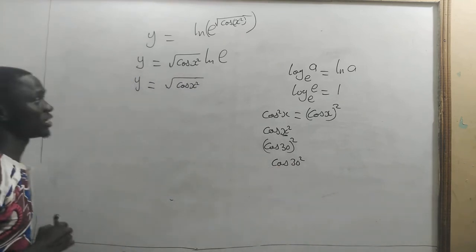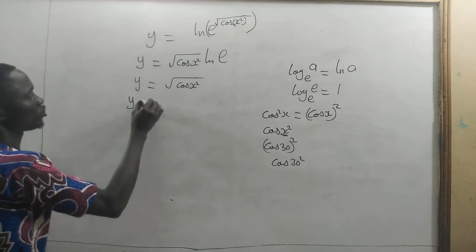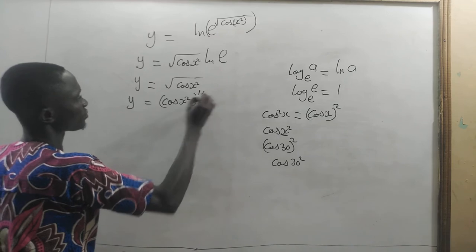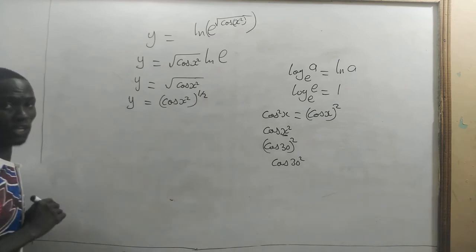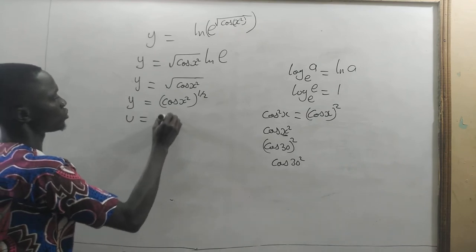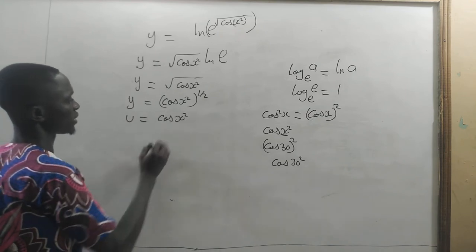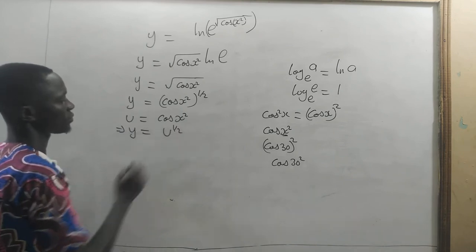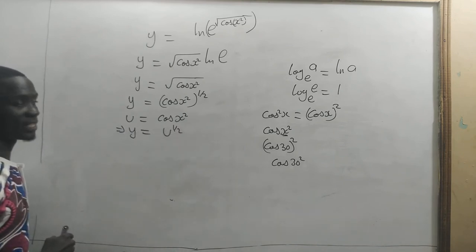So let's concentrate on our differentiation. We can write y to be equal to cosine x squared all to the power half. This is the function of a function. So first, let's take u to be equal to cosine x squared. This in variable makes y equal to u to the power half.